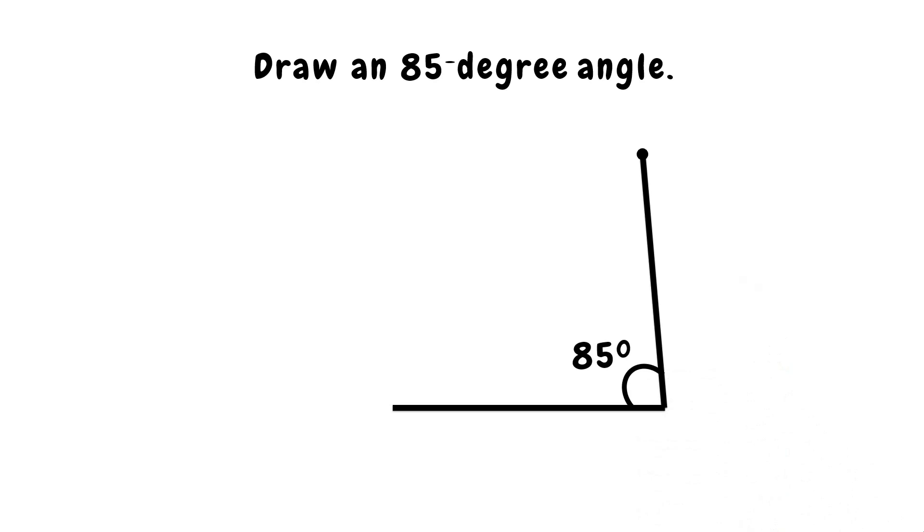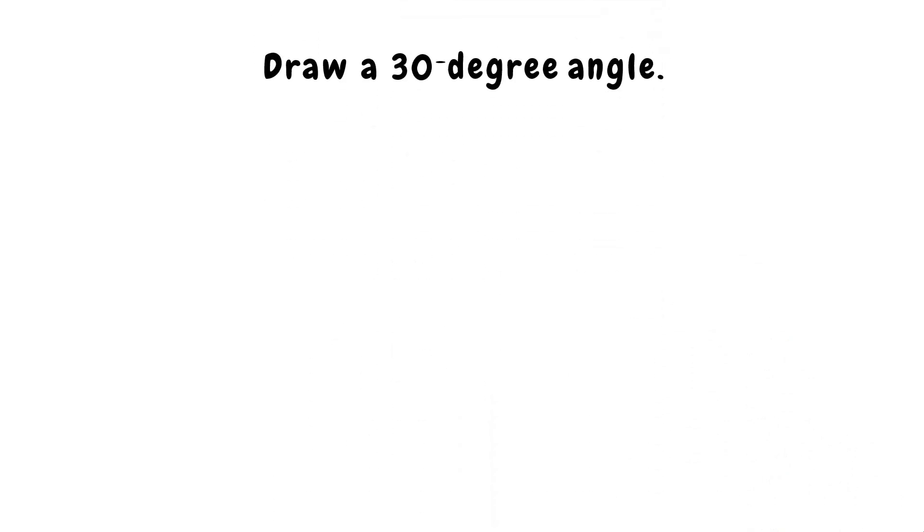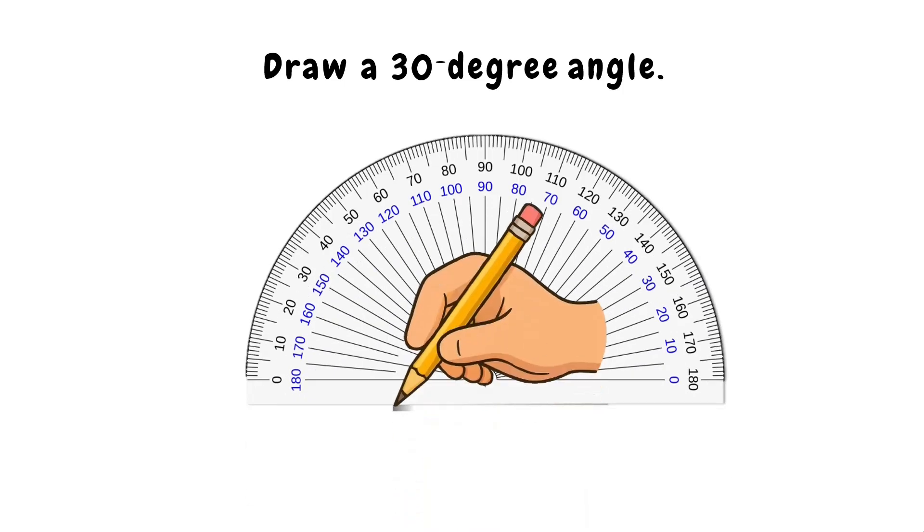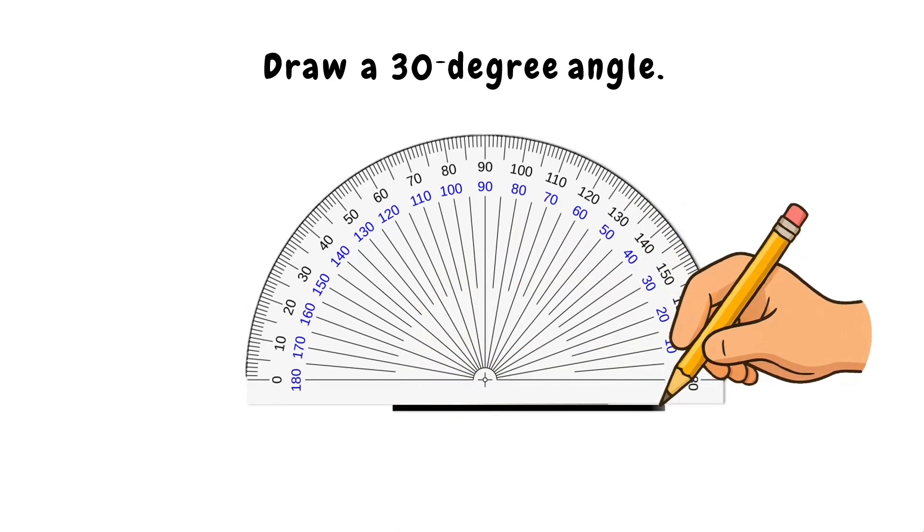Perfect! Now, let's draw another one. This time, a 30 degree angle. First, start with the baseline. Again, this will be our arm or one ray of our angle.